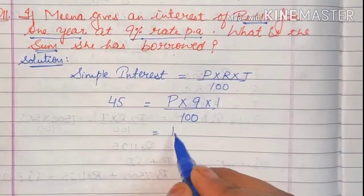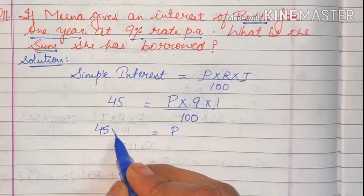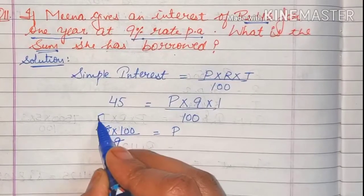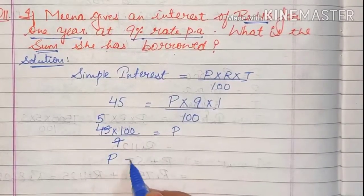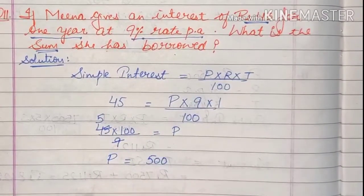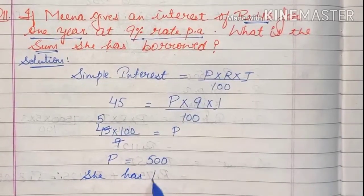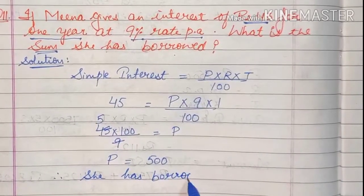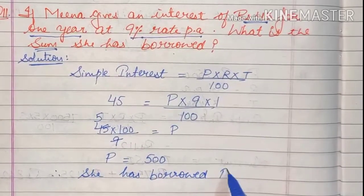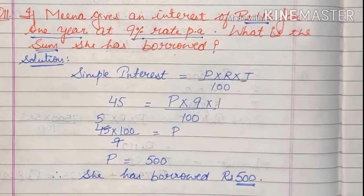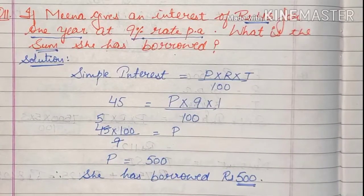Now we will transpose, so 100 upon 9 times 45. So principal is 500. That means therefore she has borrowed rupees 500. So this is the solution of question number 11.